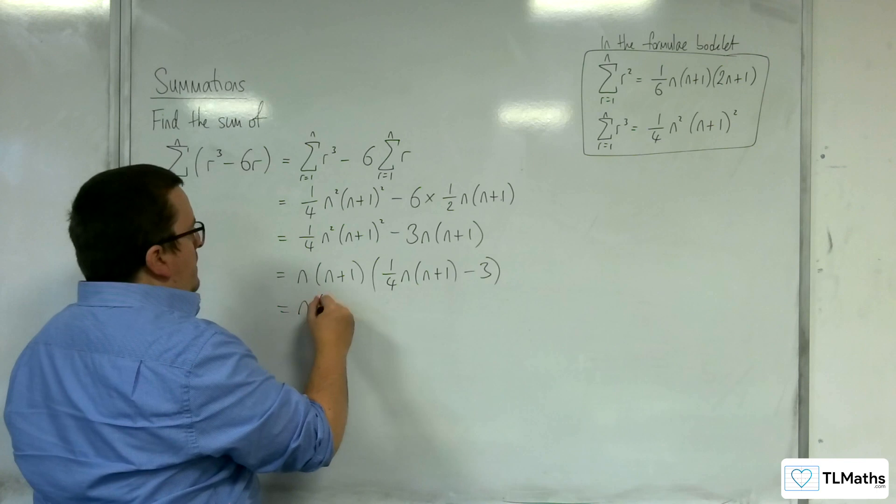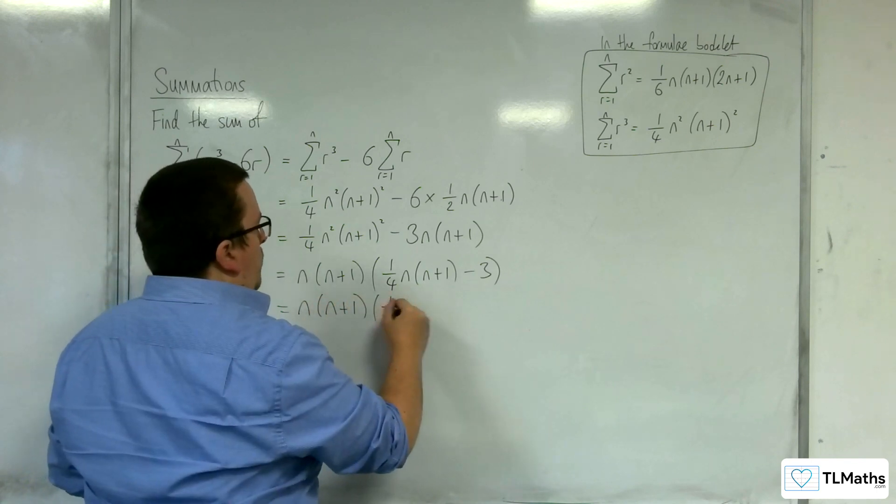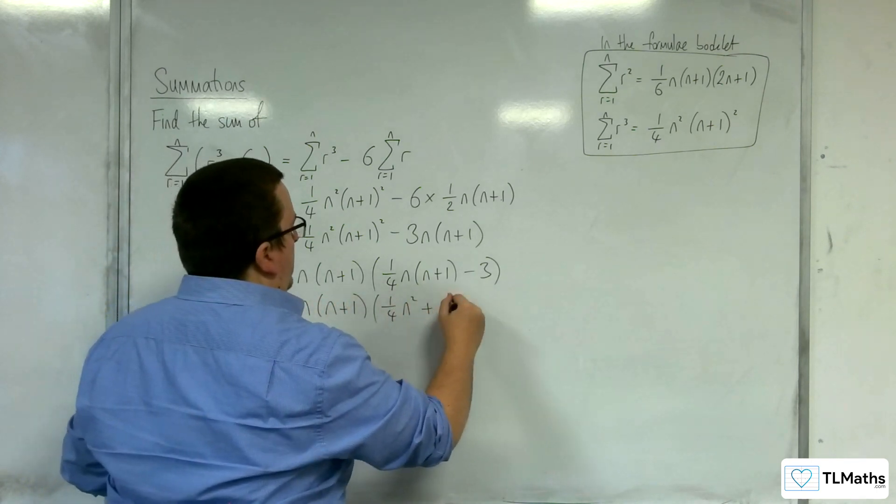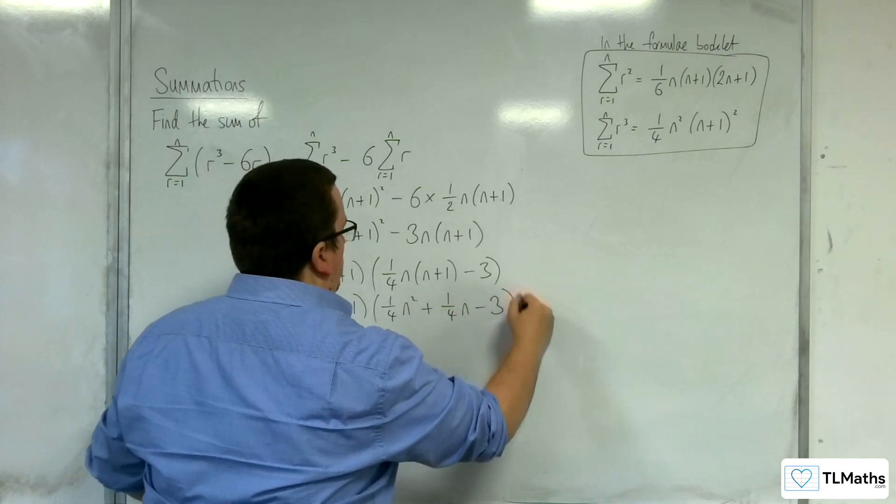So we have the n, n plus 1, we've got 1 quarter n squared plus 1 quarter n, take away 3.